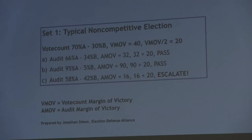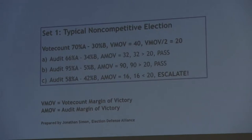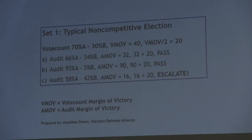Now you get one where the audit is 58-42. Margin of victory in the audit is 16. 16 is less than 20 — it's more than halfway towards where that outcome could have been reversed. That one you escalate. I've given an example where VMOV over two is written into the legislation. It could be VMOV over four, over three, over five — that's a question of legislative lobbying. I actually think the half standard is very simple and would be pretty effective.